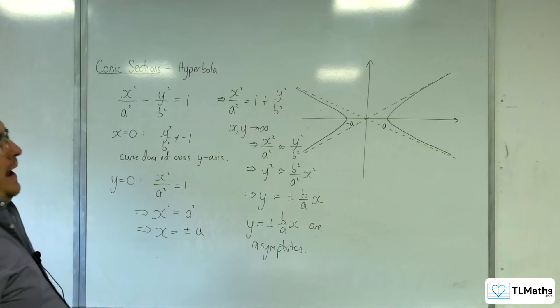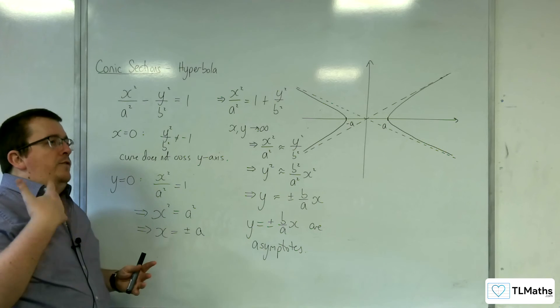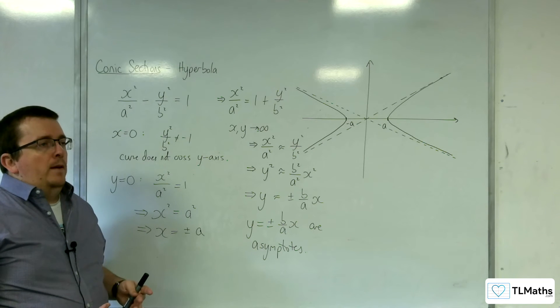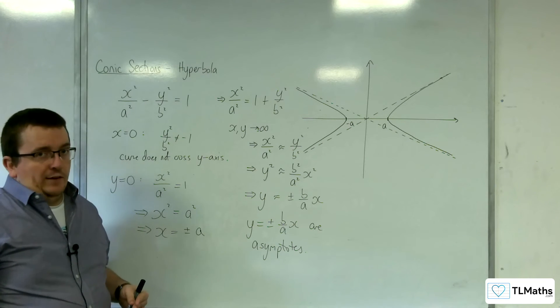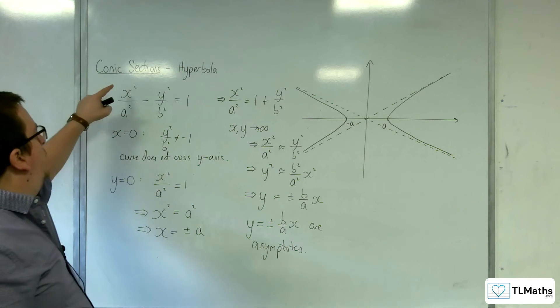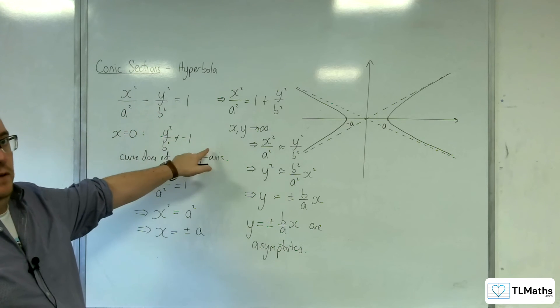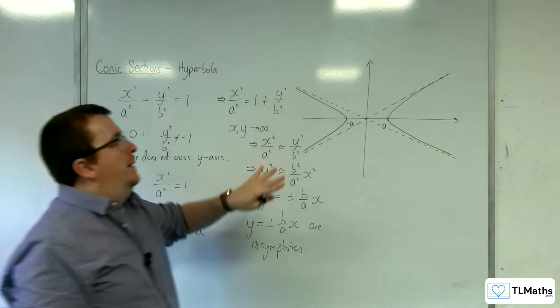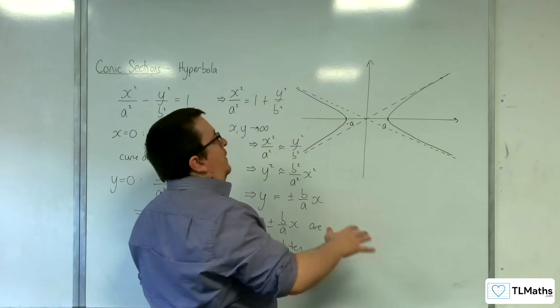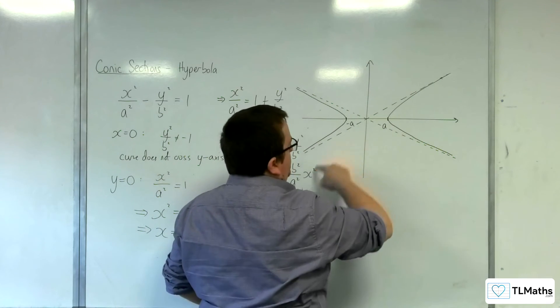Now, you can, so when you extend this, if you were to reflect it in the y equals x line, then what you would end up with is y squared over a squared take away x squared over b squared equals 1. So we'll deal with that later on. And you're going to get a graph that looks like this. So it'll be up there and down there.